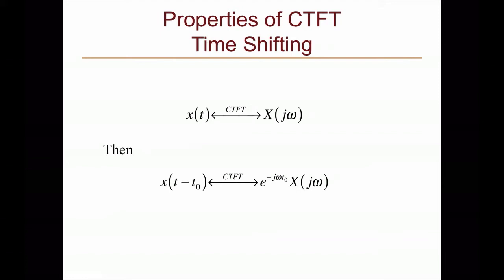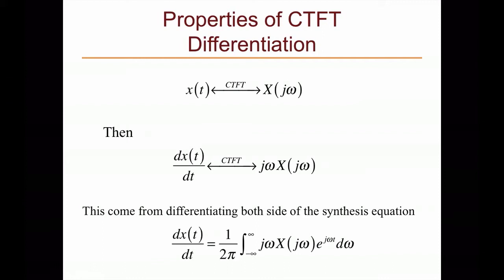For time shifting, if X(t) corresponds to X(jω), then X(t - T0) transforms to e^(-jω·T0) · X(jω). Note that the value T0 here has to be substituted for T0 in the frequency domain.